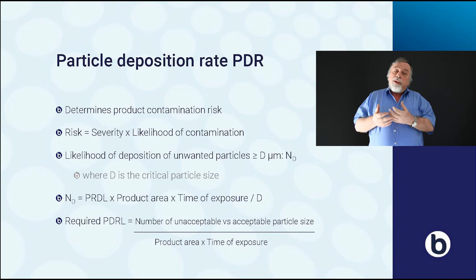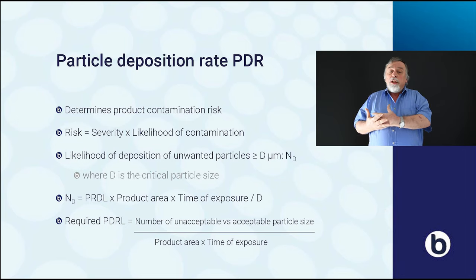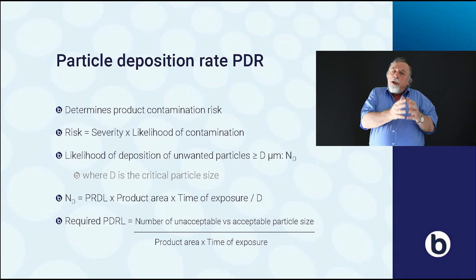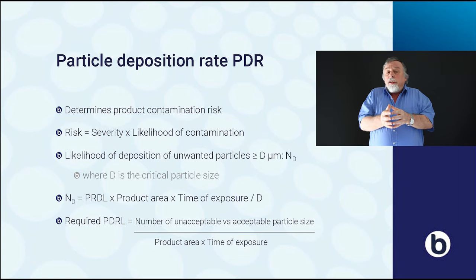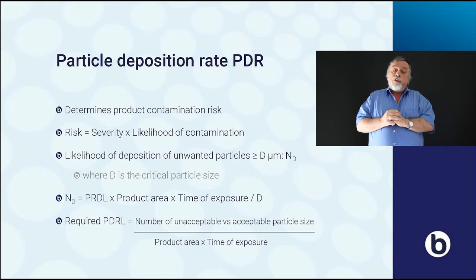You can also turn it the other way around and set requirements for the particle deposition rate level. In that case, the particle deposition rate level is derived from the number of acceptable particles for a certain particle size. You can accept a very low number of larger particles, or a slightly higher number of smaller particles. You divide this number by your product area and time of exposure to get your particle deposition rate limit.